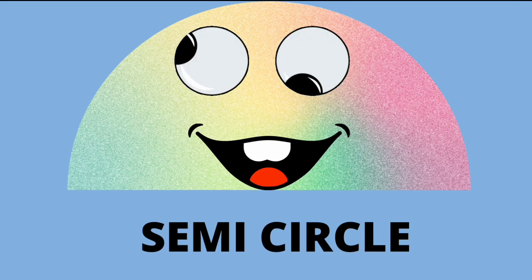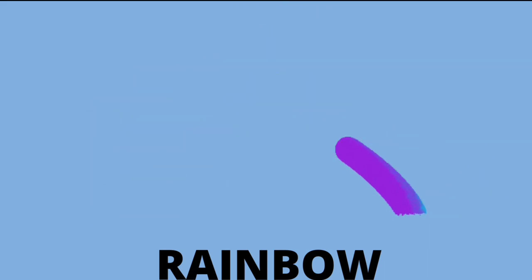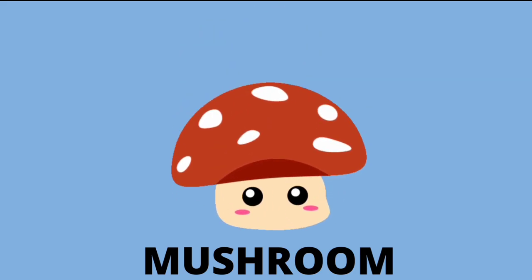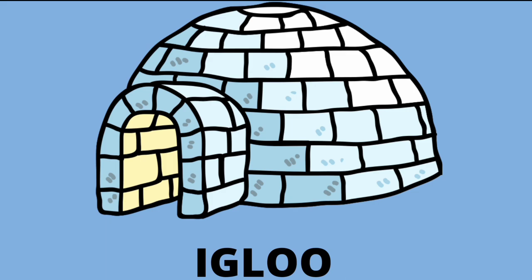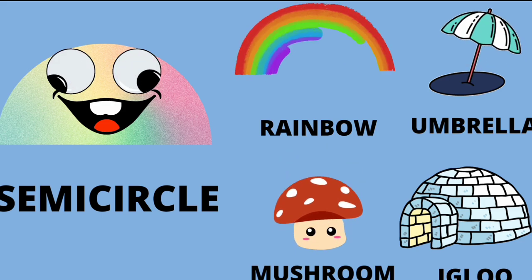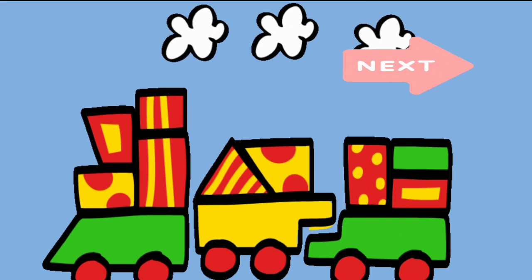Let's move to another shape. Shape: semi-circle. Semi-circle: rainbow. Semi-circle: umbrella. Semi-circle: mushroom. Semi-circle: igloo. Semi-circle — rainbow, umbrella, mushroom, igloo.